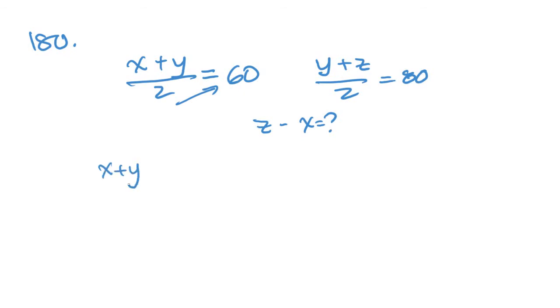180 says, if the average or arithmetic mean of x and y, so x plus y over 2, the average of that equals 60, and the average of y and z is 80, then what is z minus x? We've already set up these two problems. Let's cross multiply, and we get x plus y equals 120, and y plus z equals 160.